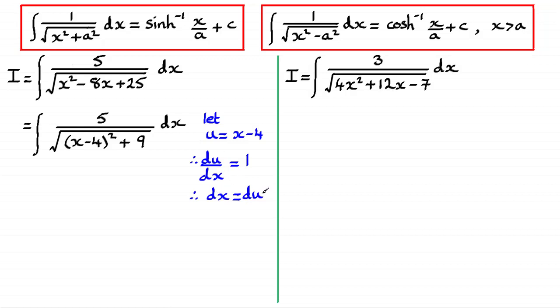So if we substitute back, the integral that we get then is 1 over all of the root of u squared plus, and you'll notice instead of the 9, I've written 3 squared. Obviously, I could leave it as the 9, but just taking it as 3 squared. And I've also pulled out that 5 out the front of the integral.